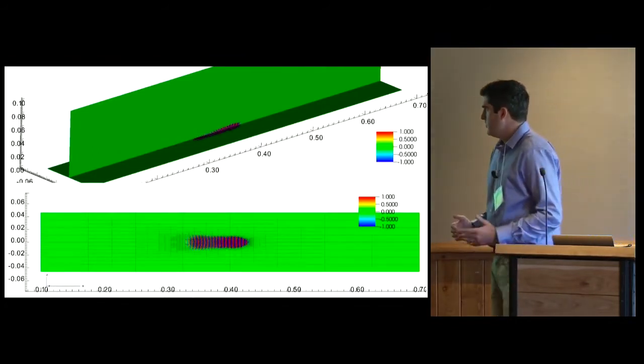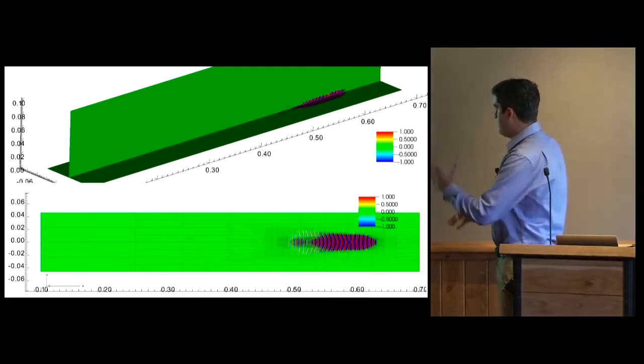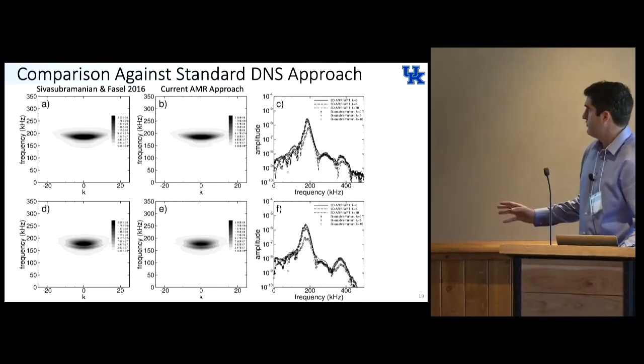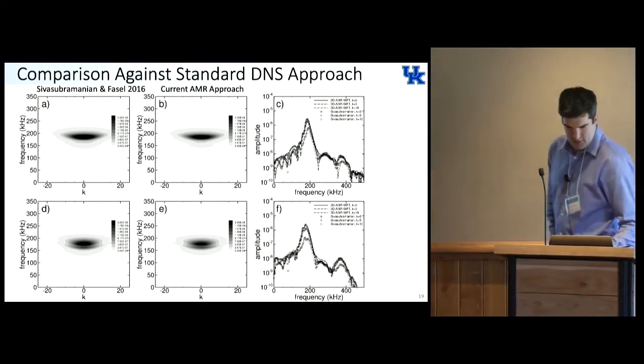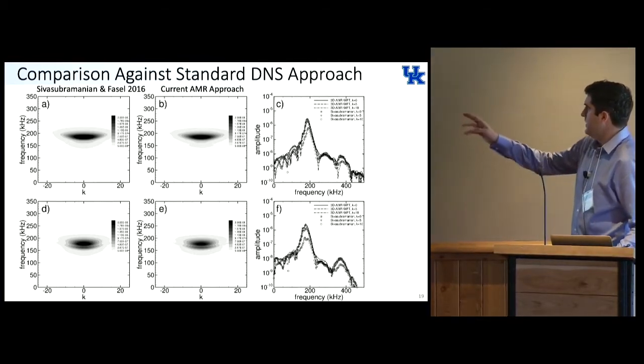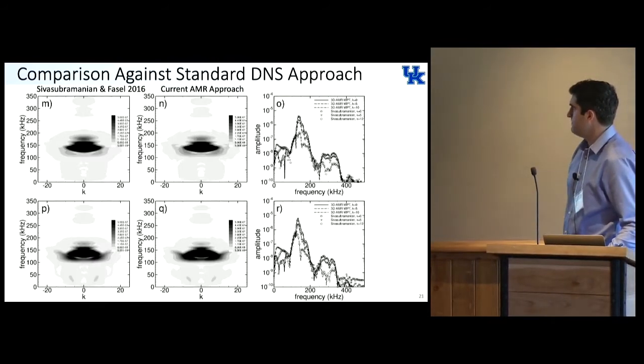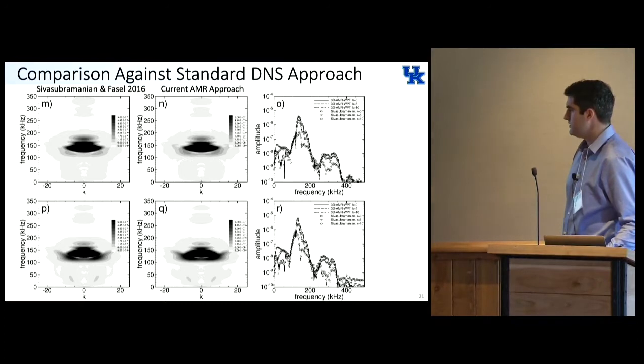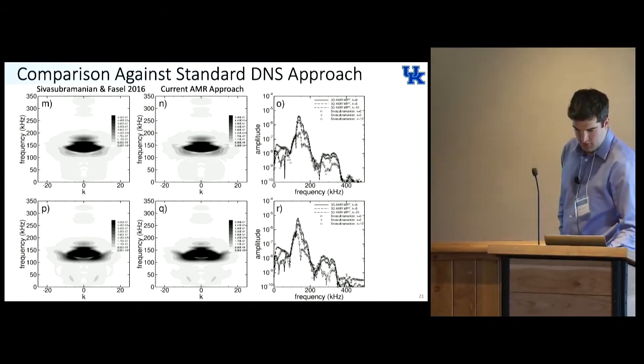We validated this for a hypersonic boundary layer flat plate. As you can see, the wave packet convects downstream and the mesh is successfully tracking it. We compared this with DNS results and we got a very good comparison. This shows the frequency and wave number for DNS and then for our approach and then the comparison. This is different instances in space. As we move downstream, we see the non-linear mechanisms being introduced, predominantly 2D second mode. Obviously, we wouldn't be able to capture all these methods if we were using a linear approach.